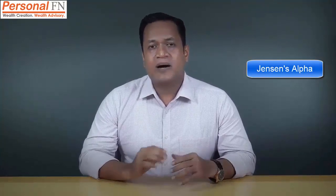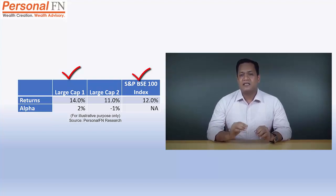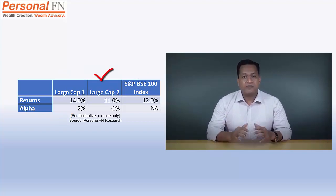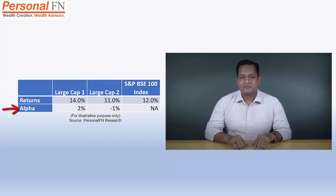Now coming to ratio number 5, that is Jensen's alpha. Investors invest in mutual funds to generate alpha or market-beating returns with the expertise of the fund manager. Jensen's alpha measures the level of outperformance or underperformance of the fund compared to the benchmark index. Simply put, it is the difference between the actual return of a fund and those generated by the benchmark index. So if a large-cap fund has delivered a return of 14% in the last one year while the benchmark S&P BSE 100 index has simultaneously generated a return of 12%, it means the fund has generated an alpha of +2%. If another large-cap fund has underperformed and generated only 11%, then the alpha is -1%. An actively managed mutual fund can have a positive or negative alpha — a positive alpha indicates outperformance, while a negative alpha indicates underperformance.